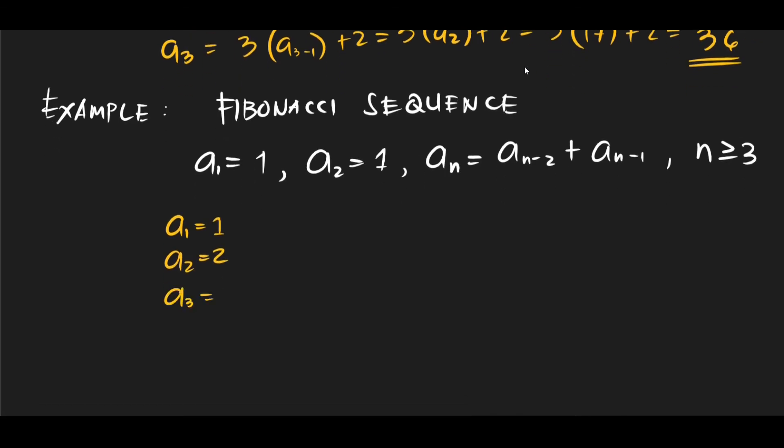a3 is equal to a3 minus 2 plus a3 minus 1. So what do we have here? a1 plus a2. Okay, so we already have those. Oh, I'm sorry there. I made a mistake in copying. a2 should be equal to 1. Okay, so we have 1 plus 1 is equal to 2.